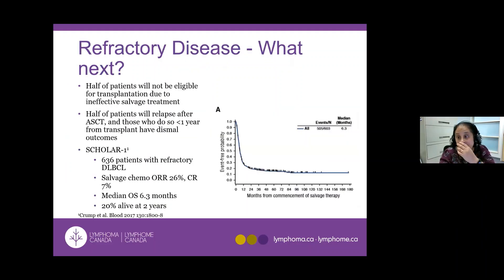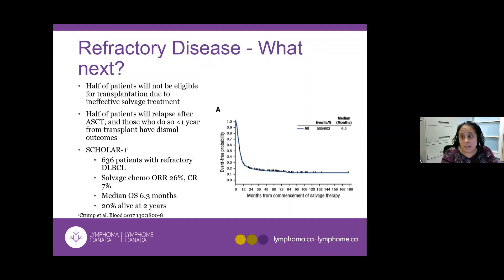For the refractory patient — someone who doesn't respond to chemotherapy or salvage chemo and therefore can't receive a stem cell transplant, or who relapsed after a transplant — outcomes are quite poor. Looking at the survival curve, there's a significant drop in the first year: less than 20% of people are still alive at two years. Before CAR-T cell therapy, the average patient in this category lived about six months. It was one of the most devastating things to tell a patient, because nothing we had was really helpful.